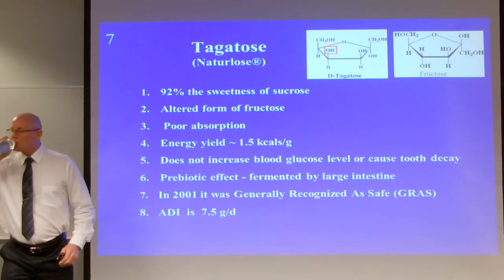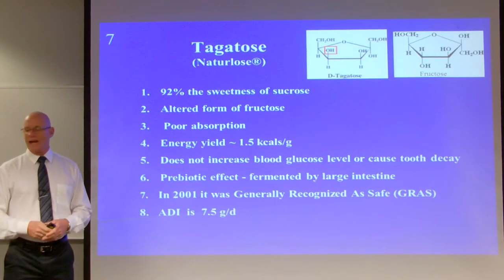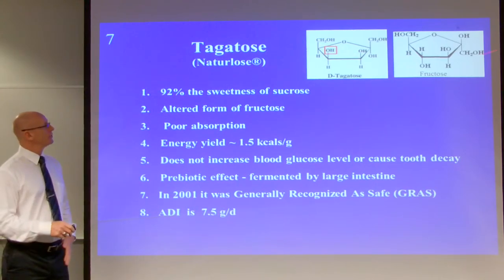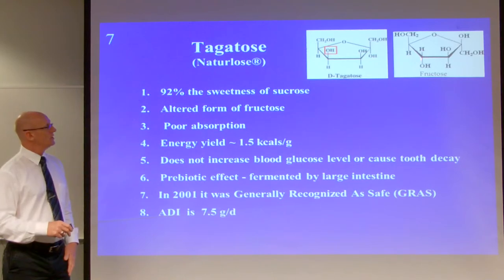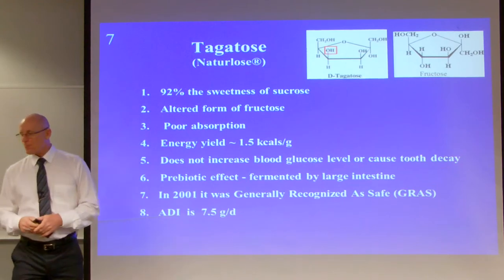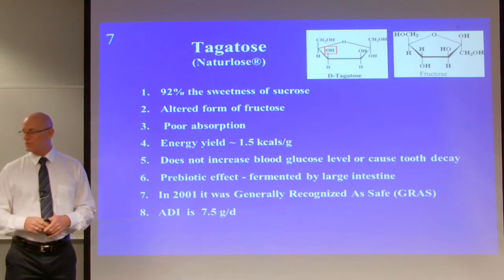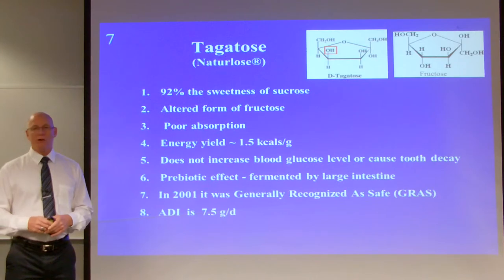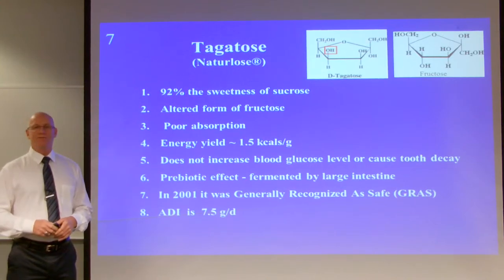Tagatose, also known as neutralose, is 92% as sweet as sucrose. It is an altered form of fructose — the hydroxyl on tagatose points up while on fructose it points down. It has poor absorption, an energy yield of approximately 1.5 kilocalories per gram, and does not increase blood glucose levels or cause tooth decay. It acts as a prebiotic and is fermented by the large intestine. In 2001 it was generally recognized as safe, with an adequate daily intake of 7.5 grams per day.